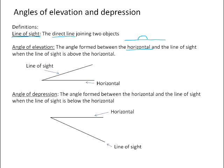When we form an angle between the horizontal and the line of sight, and that line of sight actually lies above the horizontal, then we have an angle of elevation that is created.